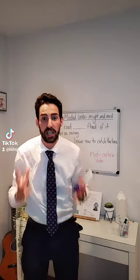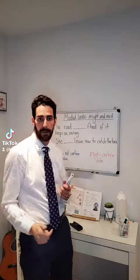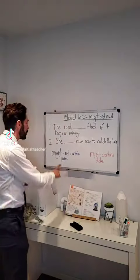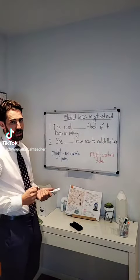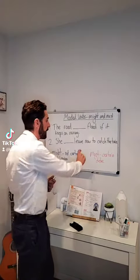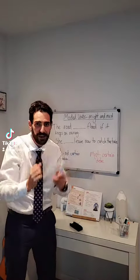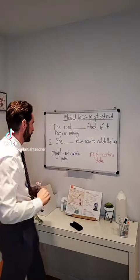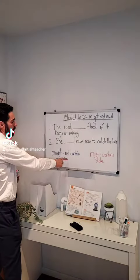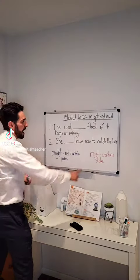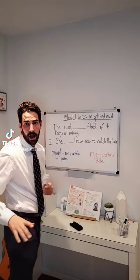It all depends on the certainty of something happening. So it's might when it's not certain it will happen, and we use must when it's definitely going to happen — it's certain it will happen. So this is might of the verb podría, and this is must of the verb deber.